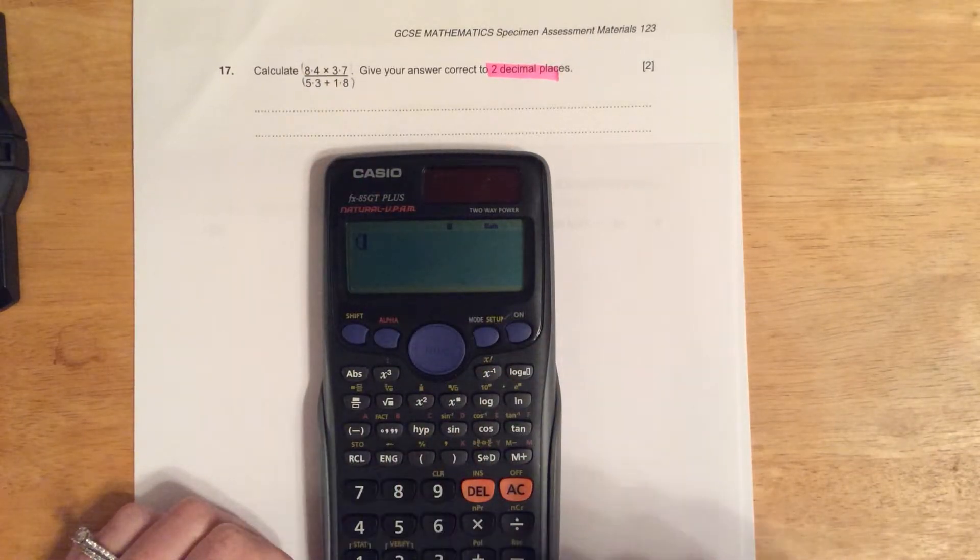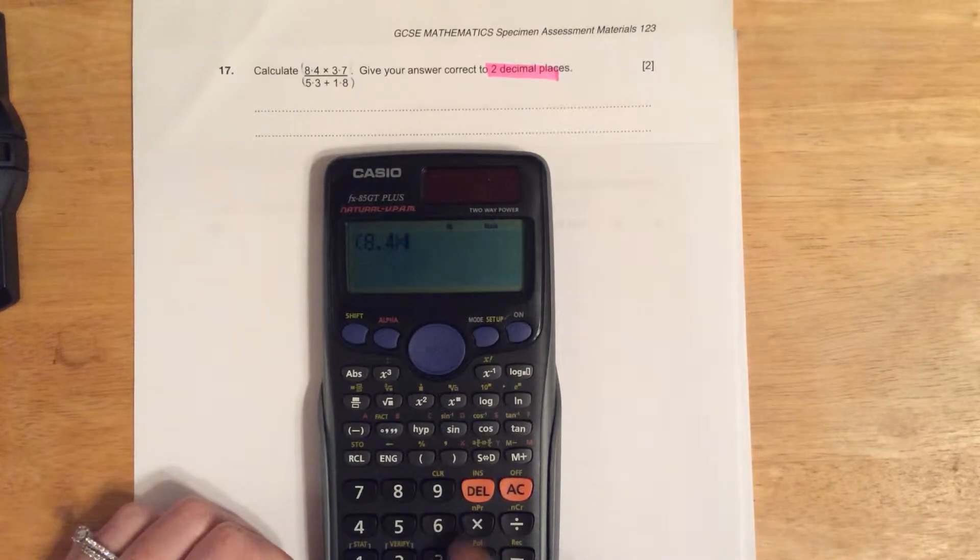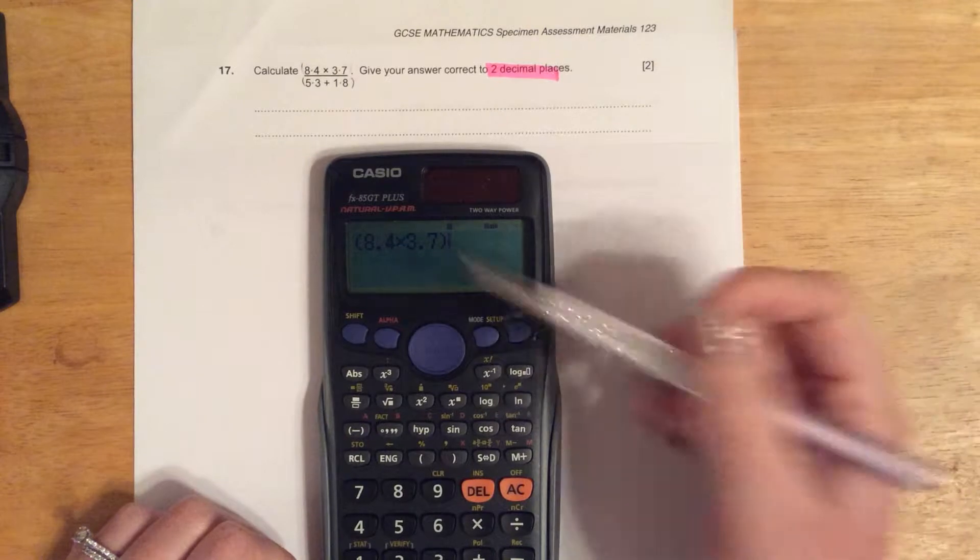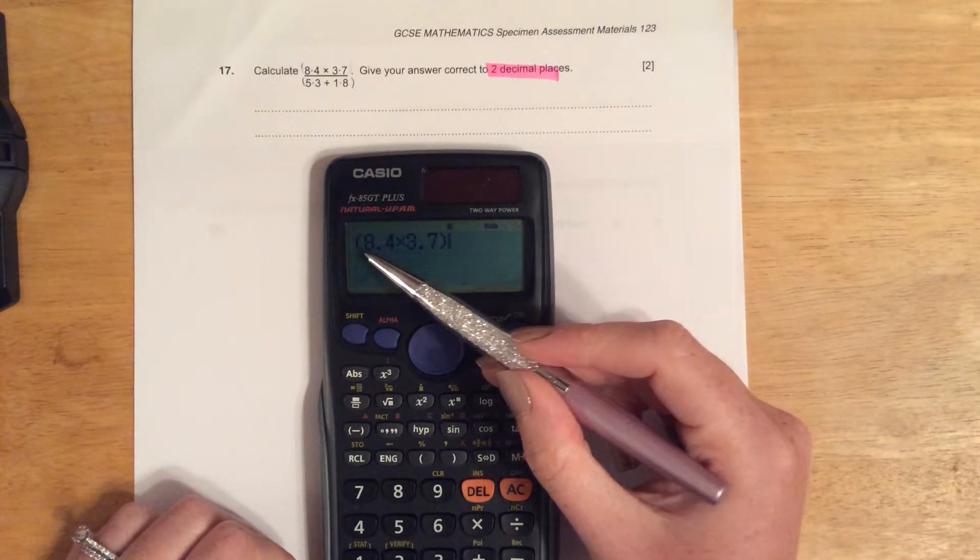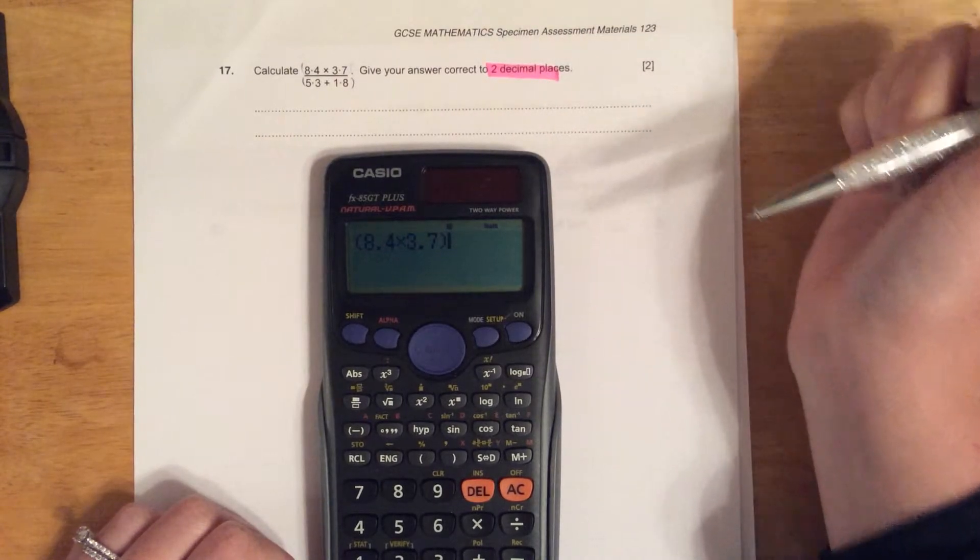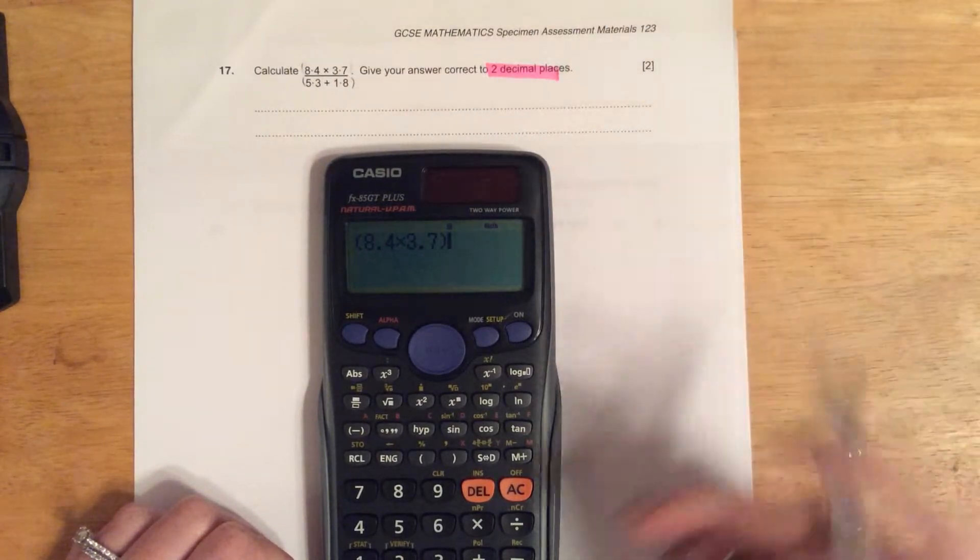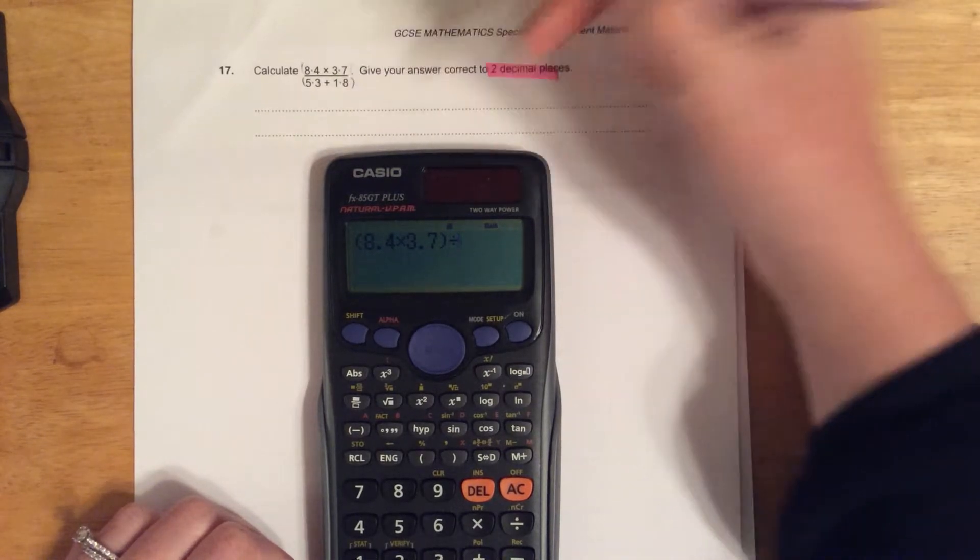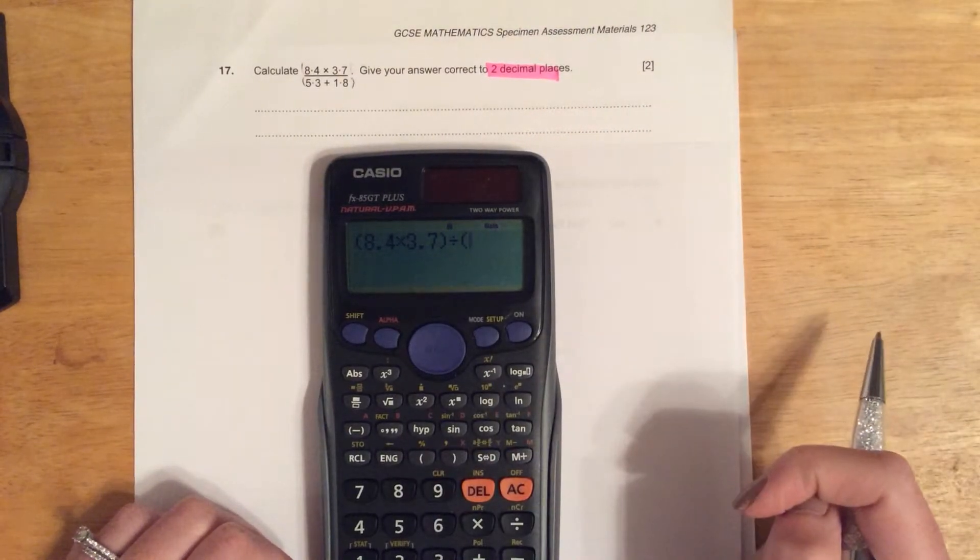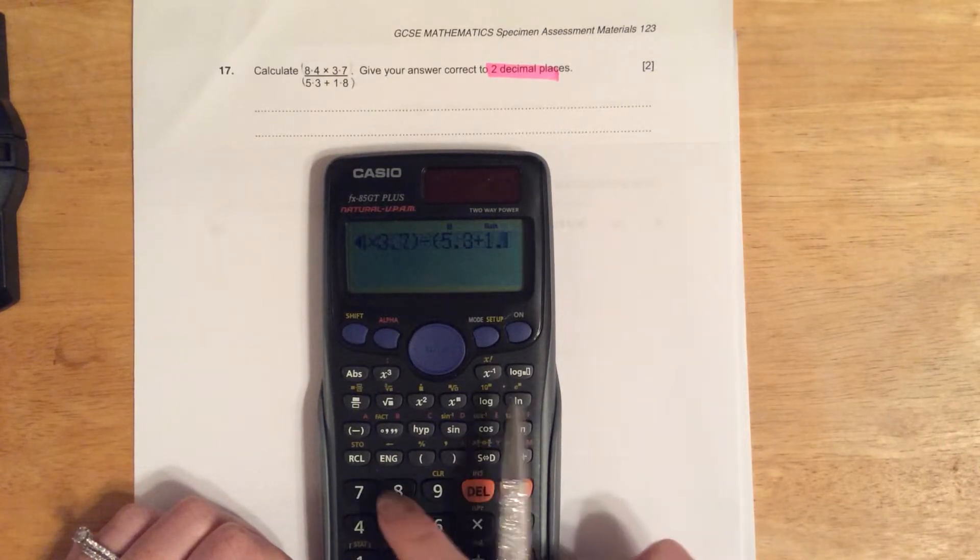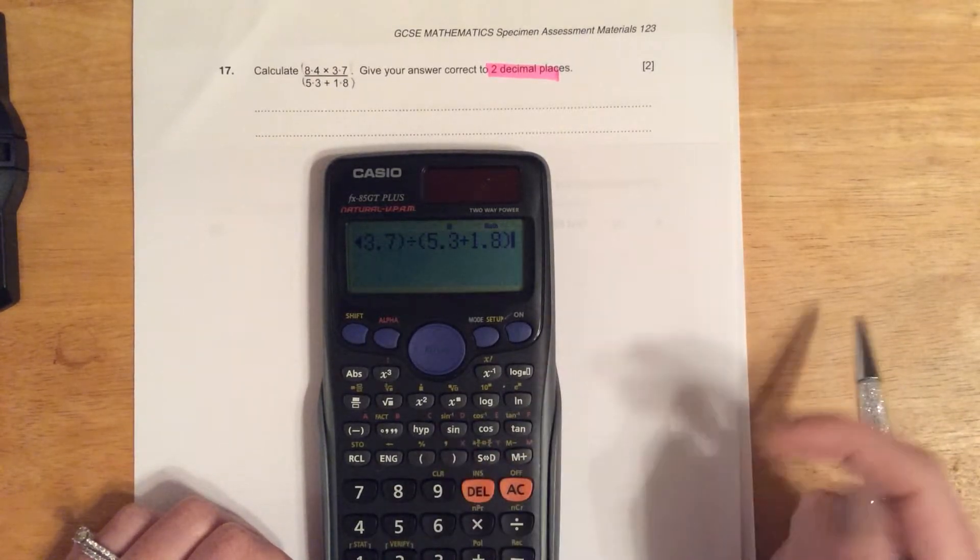Double check you've written it correctly: 8.4 times 3.7, that's correct. We know this line means divided by, and then the bottom line I have to put open bracket 5.3 add 1.8 close bracket.